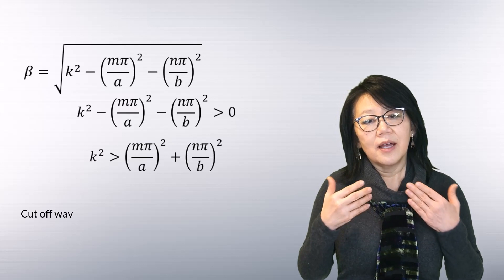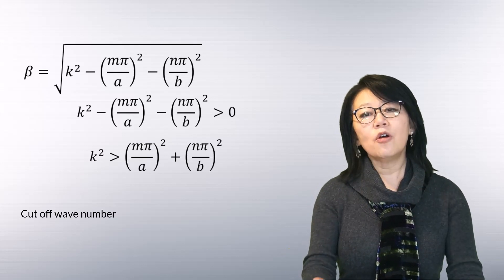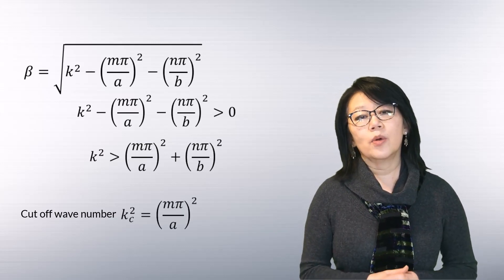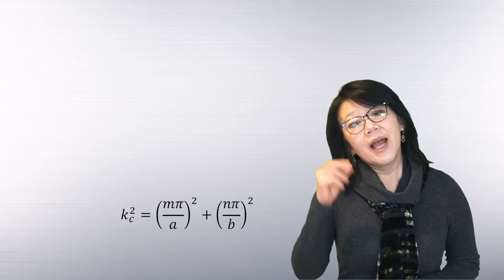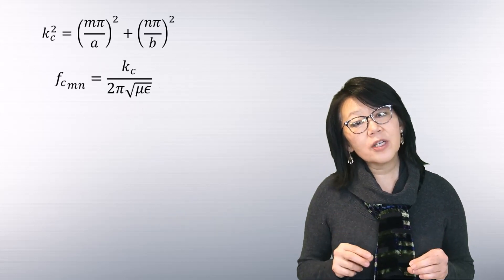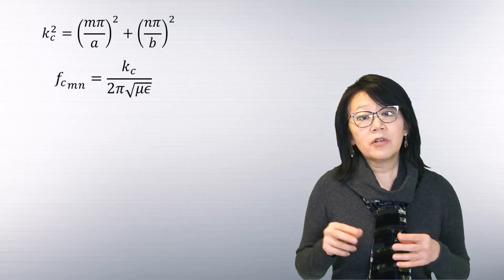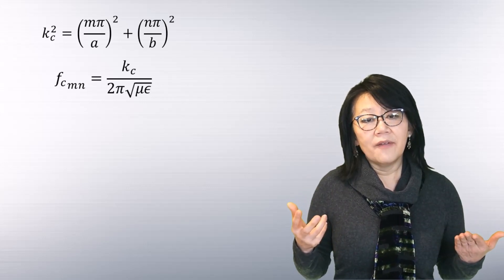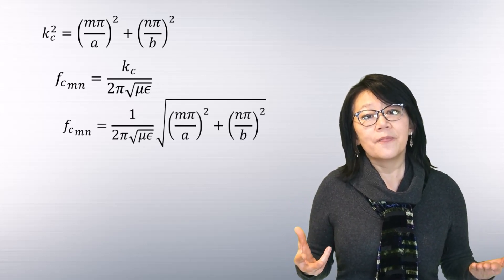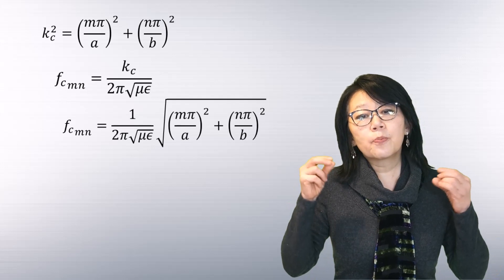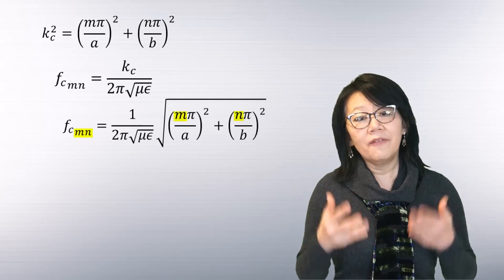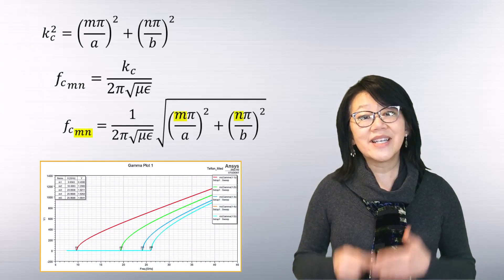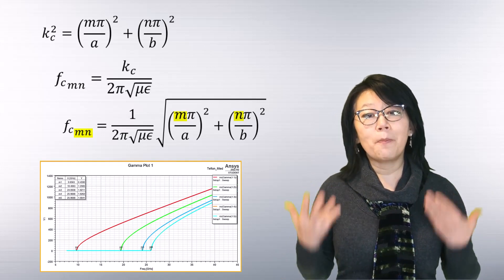There exists a condition where propagation is zero — when these terms are equal — for which the wave number is defined as the cutoff wave number, given by this equation. Since the wave number depends on frequency, this equation can be rewritten to define fc, the cutoff frequency, which purely depends on the values of m and n. That means the cutoff frequency is different for different modes.